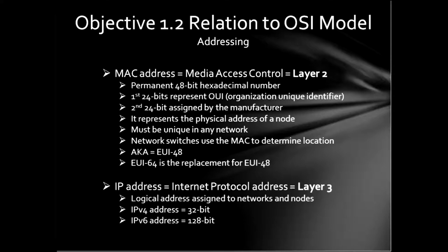Now let's move on to objective 1.2, where you're going to have to memorize a whole bunch of things. The first thing you need to know is MAC addresses. MAC stands for media access control, and a MAC address maps to layer two of the OSI model. It is a permanent 48-bit hexadecimal number, usually burned right into your network interface card, router, or whatever has a MAC address. The first 24 bits are your OUI — your Organizational Unique Identifier. The second 24 bits are usually assigned by the manufacturer, often using the serial number.